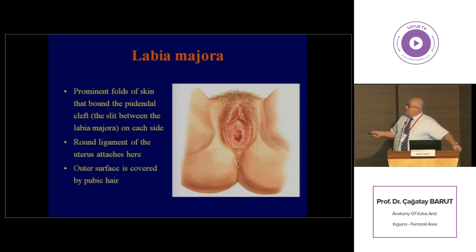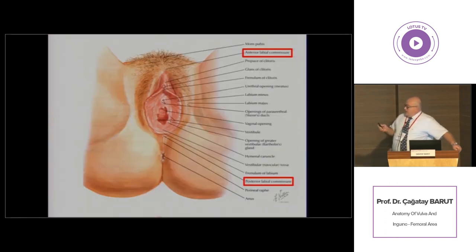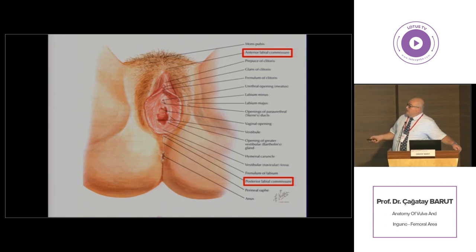Below or behind the mons pubis we can see prominent folds of skin known as labia majora. This is critical because it contains the termination of the round ligament of the uterus, and the outer surface is covered by pubic hair after puberty. Both sides of the labia majora unite to form certain commissures: this is the anterior labial commissure, formed at the anterior junction of the two labia majora, and there is a posterior labial commissure formed by the posterior junction.